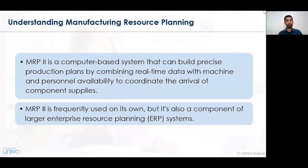Manufacturing resource planning — MRP2 — is a computer-based system that looks for specific, precise results regarding production, undertaken on the basis of real-time data. Whatever real-time data is provided by material requirement planning in conjunction with ERP, all activities are conducted in a well-coordinated way with predefined objectives and decisions.